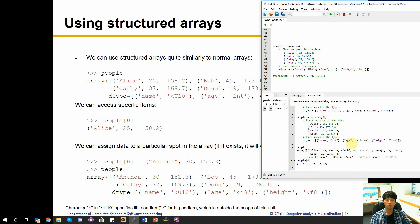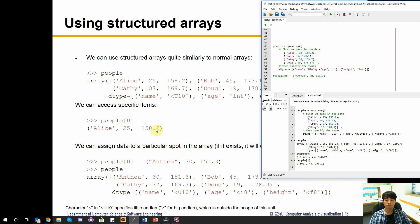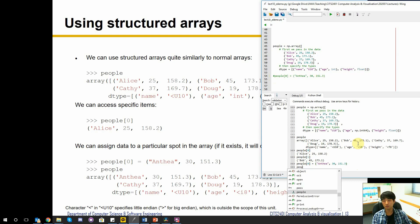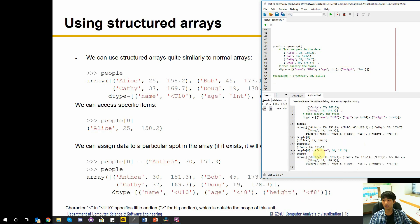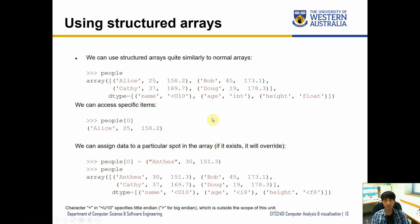As the same as a list containing a bunch of tuples, we can access individual tuples using the index as before. People at index zero is going to give us our first item which contains Alice's record. We can do this for other people as well, and we can possibly update our record. For example, I want to change index one with another person - if we look at people again, Alice is gone and instead we have Anthea inside.